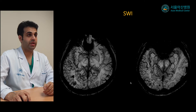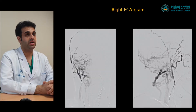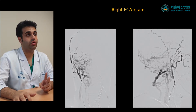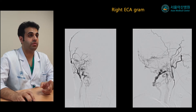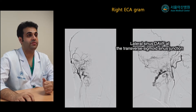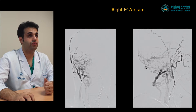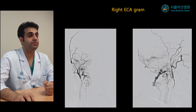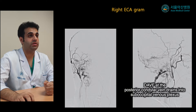The susceptibility-weighted imaging also demonstrates intracranial hemorrhage. We then injected the right external carotid artery and demonstrated two dural AV fistulas. The most important one is the lateral sinus dural AV fistula, which is fed from the transosseous branch of the occipital artery, and cortical vein reflux is noted.